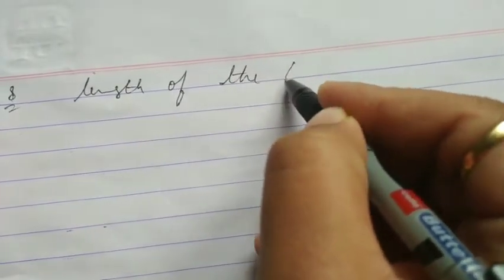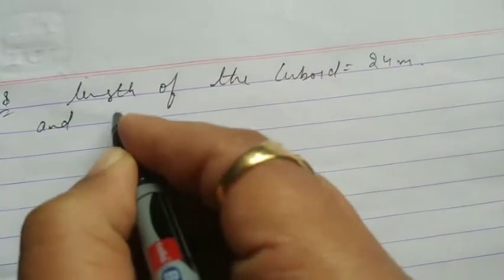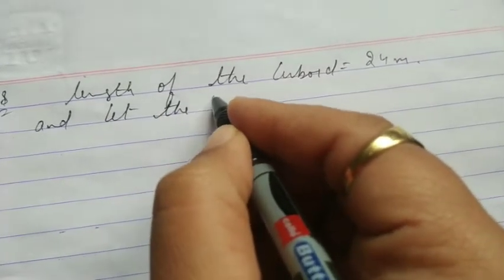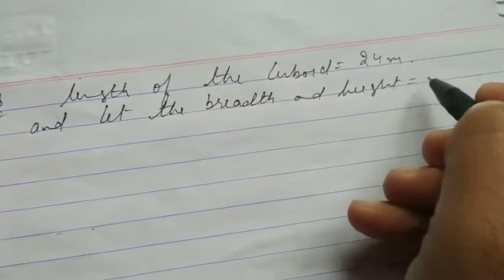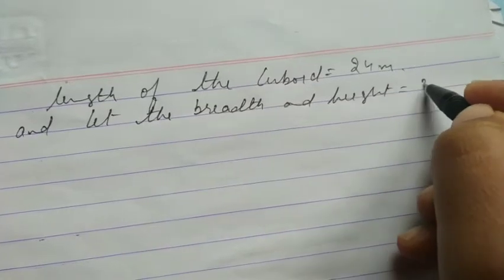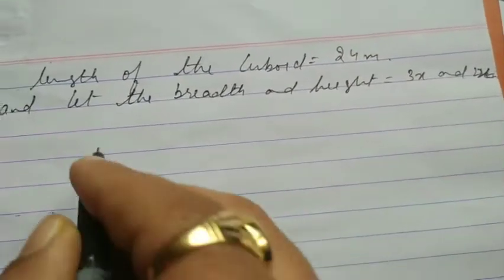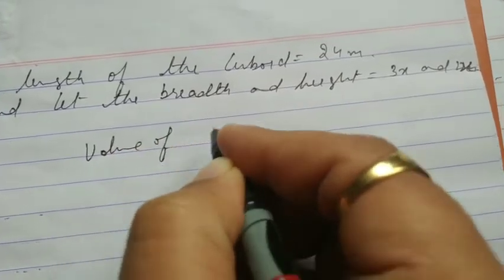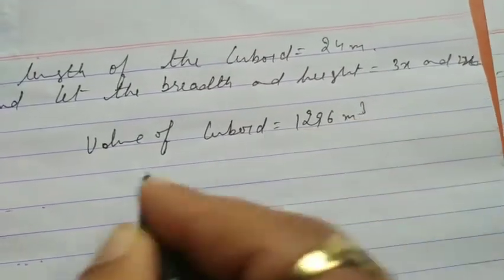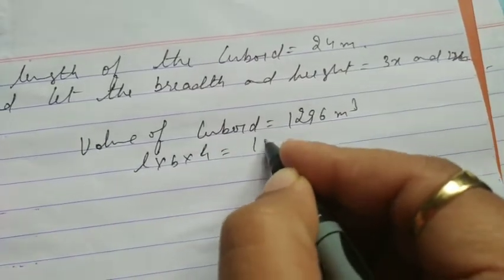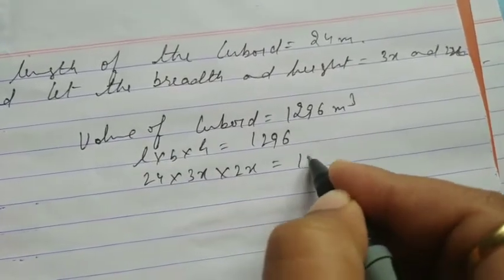Length of the cuboid is 24 meter. Breadth and height are to be found; they are in ratio 3:2. So let breadth be 3x and height be 2x. The volume of cuboid is given as 1296 meter cube. Formula of volume of cuboid is length into breadth into height, equal to 1296. Length is 24, breadth is 3x, and height is 2x.